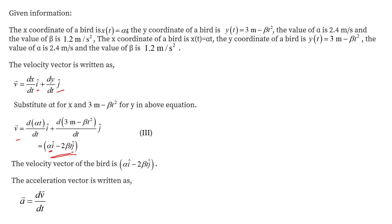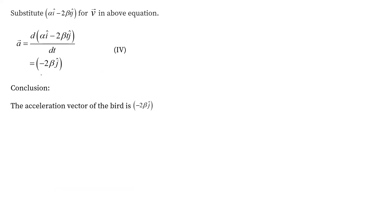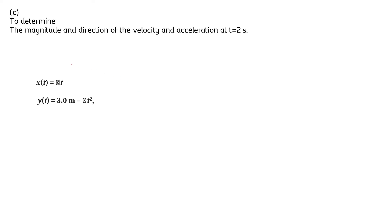Differentiating the velocity vector once more gives the acceleration vector: a = dv/dt = −2β ĵ. The ĵ component indicates the acceleration is purely in the y-direction, and the negative sign indicates it is in the negative y-direction. So the acceleration vector is a = −2β ĵ.